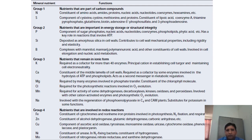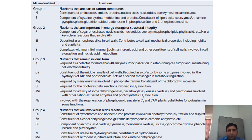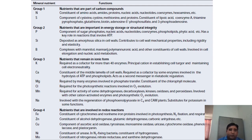Silicon is deposited in the cell walls of some plants and provides rigidity and elasticity. Boron forms complexes with mannitol and is involved in cell elongation and nucleic acid metabolism. In Group 3, potassium is a co-factor of various enzymes and is required for maintaining osmoregulation. Calcium is an important component of the middle lamella, the portion between the cell walls of two cells. Magnesium is also a component of various enzymes, along with chlorine, manganese, and sodium.